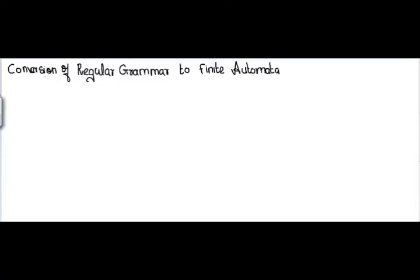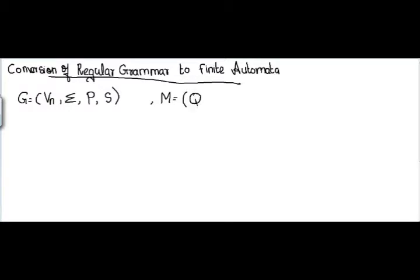In this lecture I am going to explain the conversion of regular grammar to finite automata. Regular grammar consists of four parts: V (set of non-terminals), sigma (set of terminals), P (set of production rules), and S (start symbol). Finite automata consists of five tuples: Q (set of states), sigma (set of input symbols), delta (transition function), q0 (initial state), and F (final state). I have explained the basics of grammar and finite automata in my previous video, linked in the description.